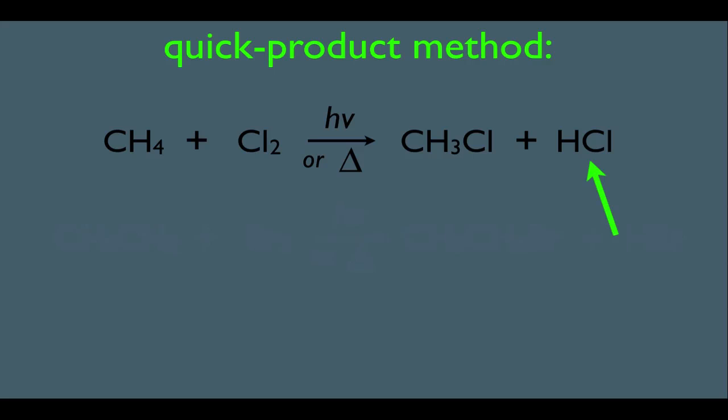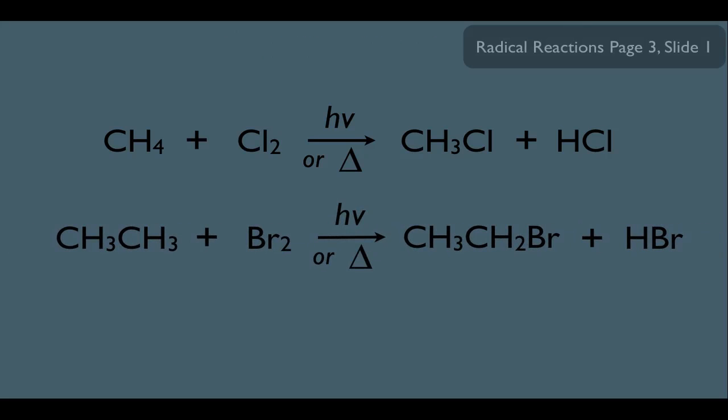Another example here, just to make sure you got this reaction down. In this case, we have an alkane, which is ethane, but we're reacting it with Br2 with either light or heat. And notice, again, all that's happening here is we're replacing one of the C-H bonds with here a C-Br bond. And notice, we're getting this time HBr as a side product. Very simple, quick product method.